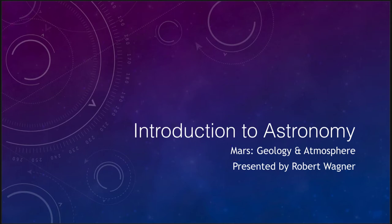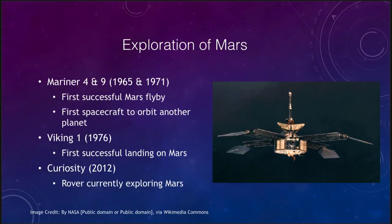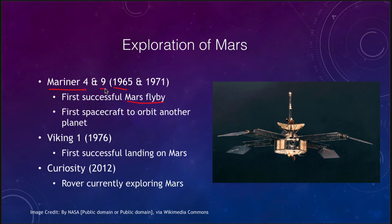Let's start off looking at some of the exploration of Mars. Mars has been probably the best explored planet, with probably two dozen craft that have visited it over the last 50 to 60 years or so. We can go back to some of the earliest ones, which would be the Mariner spacecraft. Mariner 4 in 1965 was the first successful Mars flyby, giving us our closest images of it to date. Mariner 9, six years later in 1971, was the first spacecraft to orbit another planet.